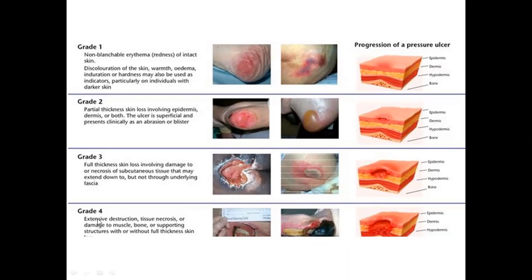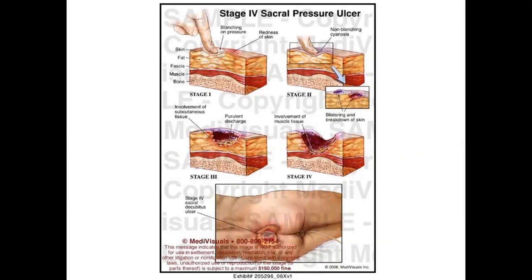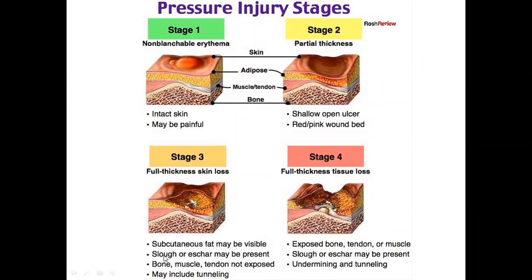Stage 4 involves extensive destruction of tissue necrosis, damage to muscle, bones, or surrounding structures, with or without full thickness skin involvement. Another type is unstageable ulcer — a ulcer whose stage cannot be determined because slough or eschar covers the wound. Eschar means black tissue material, while slough means tan, yellow, or green scar-like tissue material.